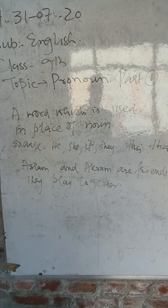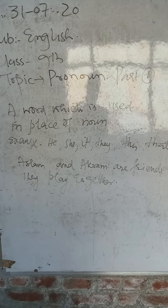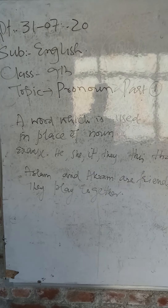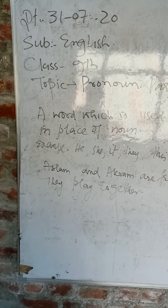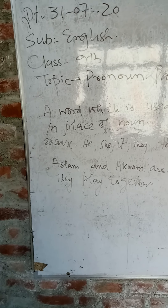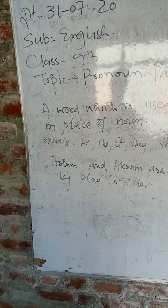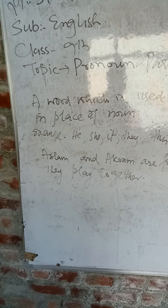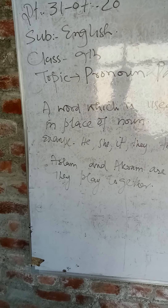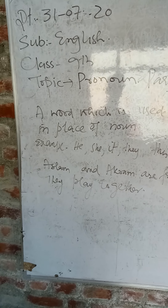A noun is a naming word. Any name of a place, person, or thing is a noun. For example: Pada, Srinagar, Delhi, Calcutta, India — these are places. Book, pencil, toys, school, shops — these are things. John, Mohan, Peter, Aslam — these are names of persons. All these naming words are called nouns.